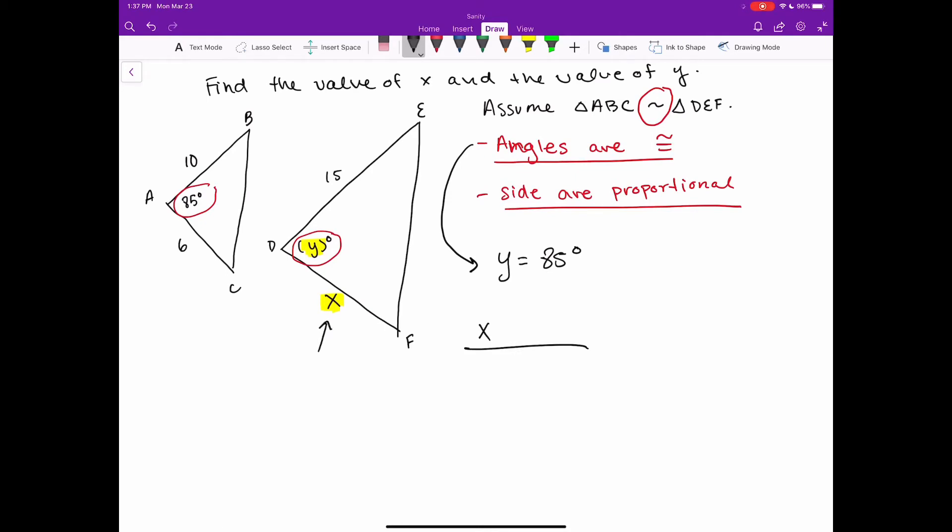You've got x is this segment length of DF, the corresponding segment in my similar figure triangle ABC is 6, a length of 6. So if I can set up this ratio, I could say that this ratio between my two sides, 6 and x, I'm going to set it up as a fraction, 6 divided by x.